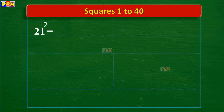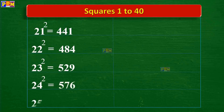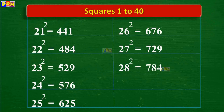21 squared is 441, 22 squared is 484, 23 squared is 529, 24 squared is 576, 25 squared is 625, 26 squared is 676, 27 squared is 729, 28 squared is 784, 29 squared is 841, 30 squared is 900.